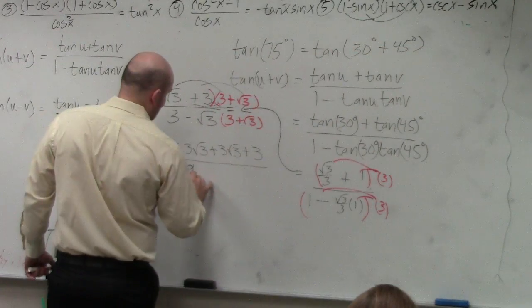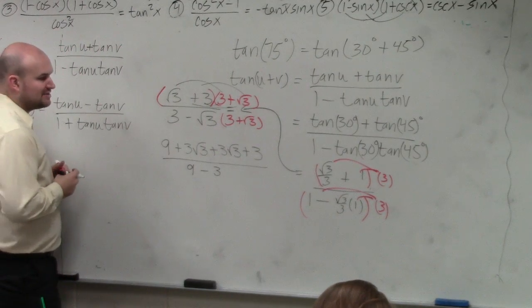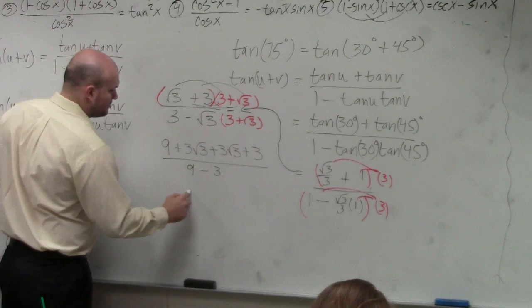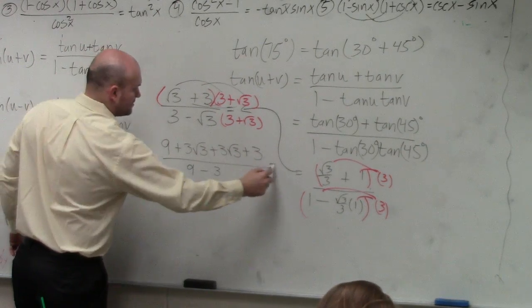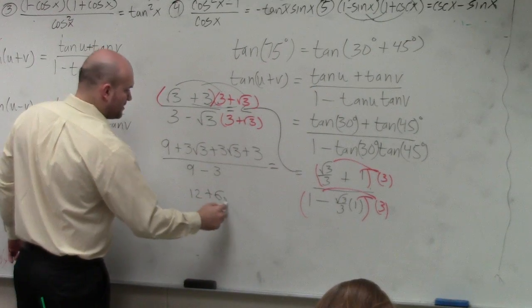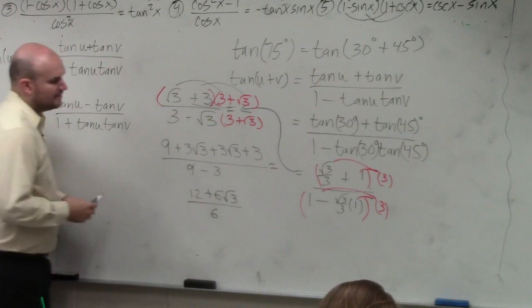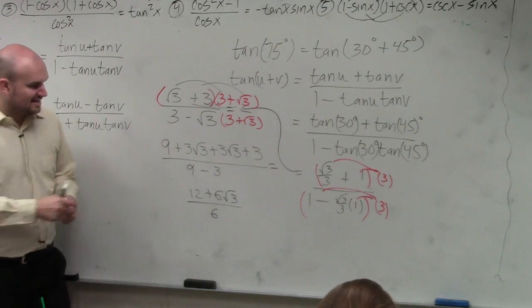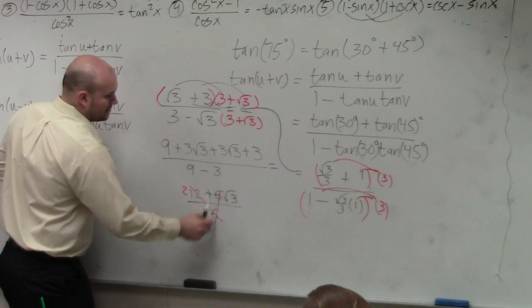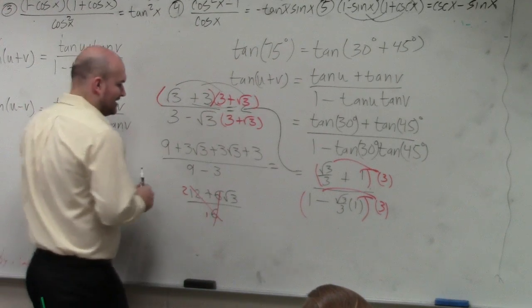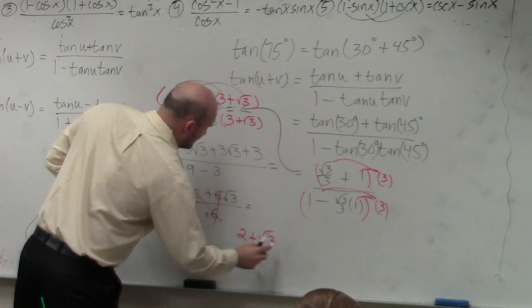So then over here, though, we'll have 9 minus 3. Now we just simplify our answers. 9 plus 3 is 12. This becomes plus 6, plus 6 square root of 3, all over 6. And then this 6 divides into both of these. So therefore, your final answer is 2 plus square root of 3.